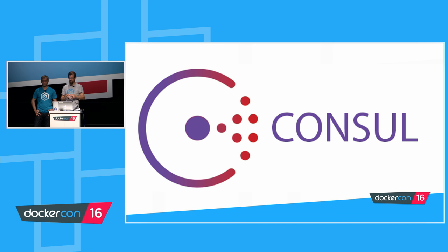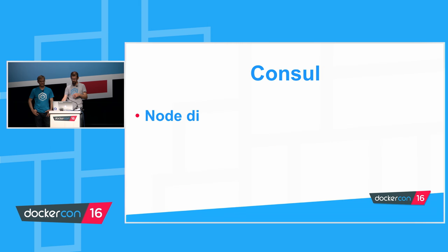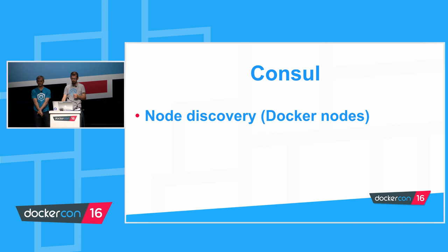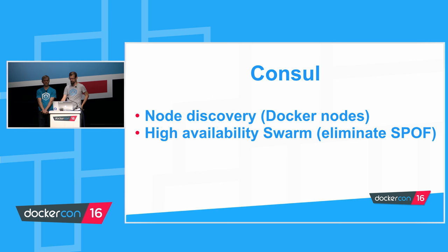The final component of our stack is Consul from HashiCorp, which bills itself as service discovery and configuration made easy — distributed, highly available, and data center aware. We use Consul for Swarm node discovery, to replace the built-in but non-production Swarm discovery service. Consul allows us to efficiently and reliably discover Docker nodes. We also use it for high availability of Swarm managers — the Swarm's built-in leader management needs a key-value store, and Consul does that for us. You can have several instances of a Swarm manager running, and if one goes down, Swarm will elect another to lead. It sounds like we might be able to eliminate Consul with the new Docker Swarm 1.12 that was announced yesterday.